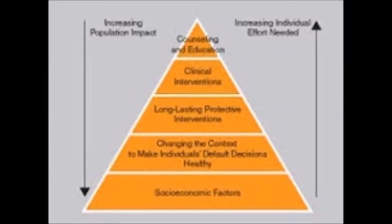In ascending order are interventions that change the context in order to make individuals' default decisions healthy — and that's what we're going to focus on in this session. Further ascending are clinical interventions that require limited contact but confer long-term protection, as well as ongoing clinical care and health education and counseling. Interventions focusing on the lower levels of the pyramid tend to be more effective because they reach broader segments of society and require less individual effort.